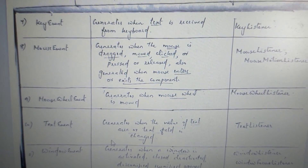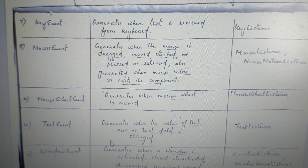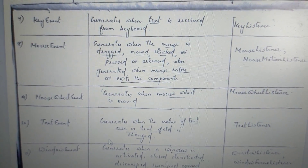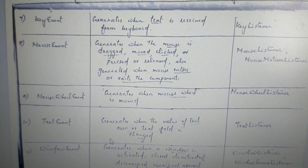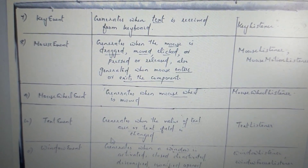Mouse event: mouse click and click on the list. The corresponding listener is the mouse listener.